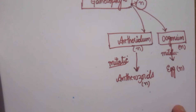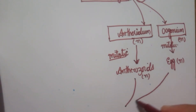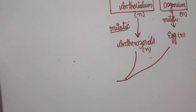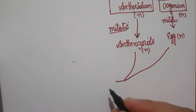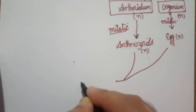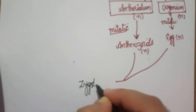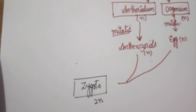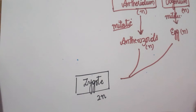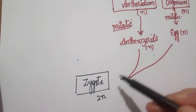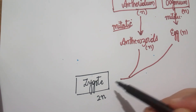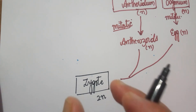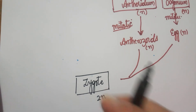The antherozoids are haploid structures. Now the egg (female) and the antherozoids (male) are going to fuse, and they will result in the production of a diploid structure called the zygote. When two haploid cells fuse, the resulting structure is diploid. The zygote is the only diploid structure in the entire life cycle of algae.